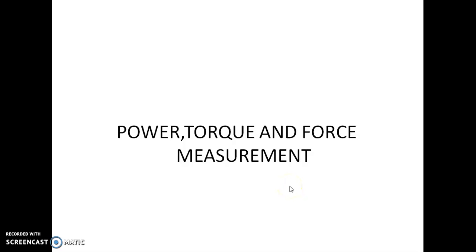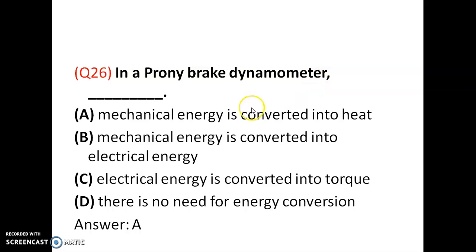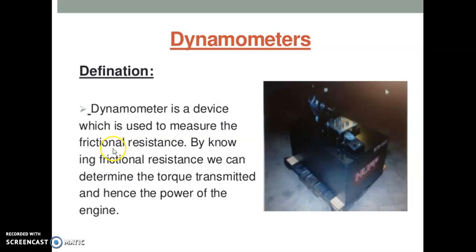Measurement of power, torque, and force. Dynamometers are used for the measurement of torque and power. In a prony brake dynamometer, mechanical energy is converted into heat. Dynamometers are used to measure frictional resistance. Once frictional resistance (force) is measured, torque = force × radius. Power = 2πNT/60. So, option A is correct.